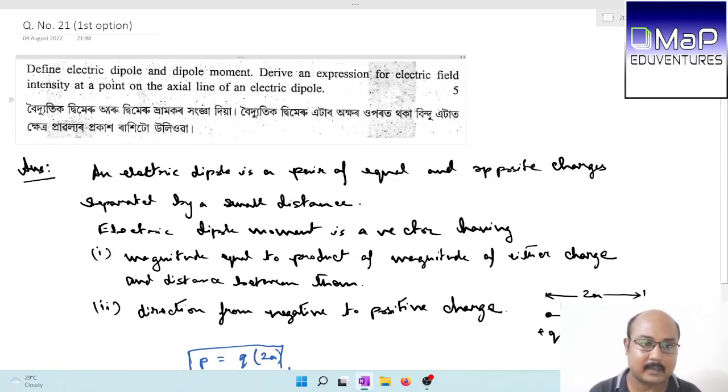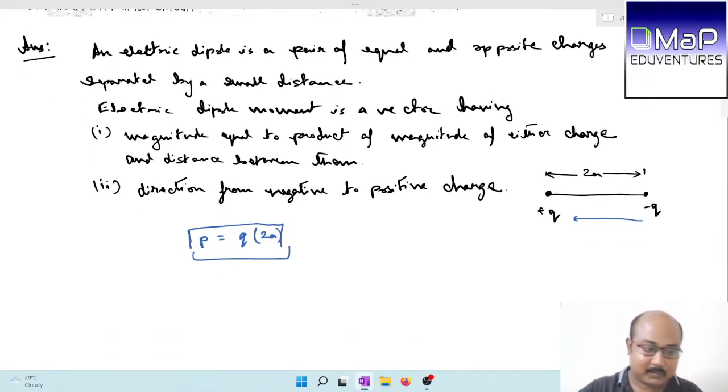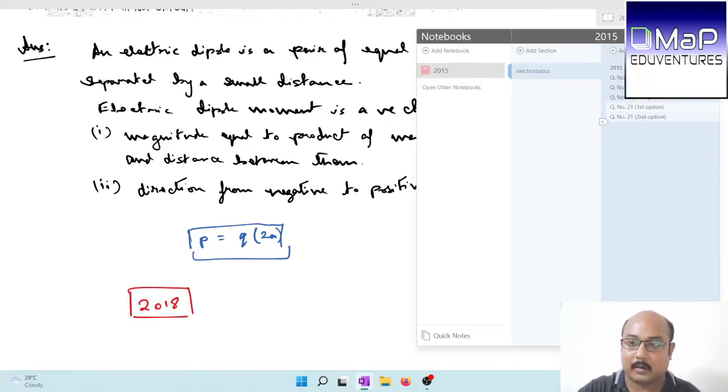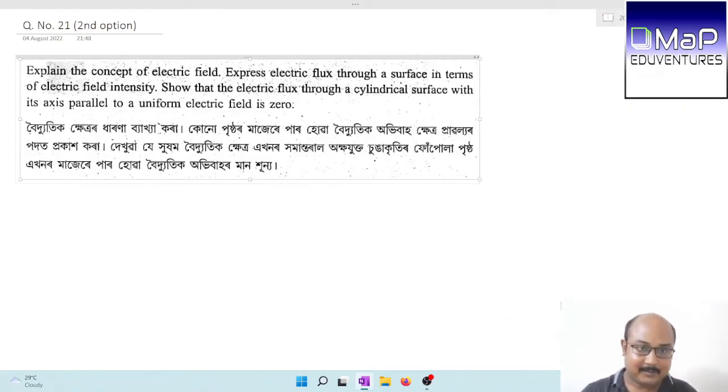In the diagram, suppose this is my plus q charge and this is my minus q charge. The distance is 2a. The electric dipole moment p has a magnitude equal to charge q times the distance between the two charges, 2a. The direction is from the negative charge to the positive charge. Since we have already solved the 2018 question paper, the solution is in that video. Please refer to the link for the solution from 2018.